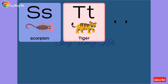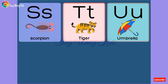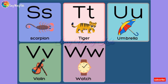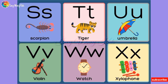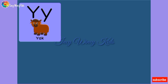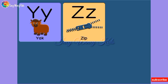T — Tiger. U — Umbrella. V — Violin. W — Watch. X — Xylophone. Y — Yak. Z — Zip.